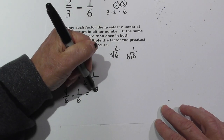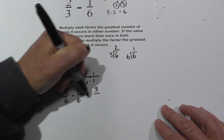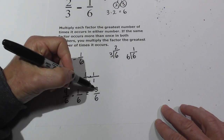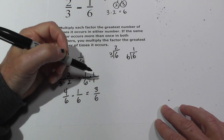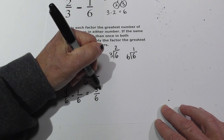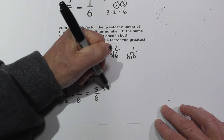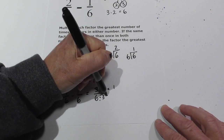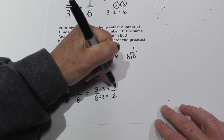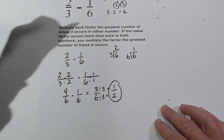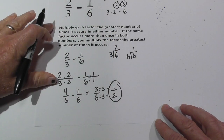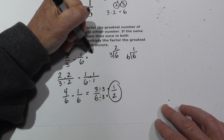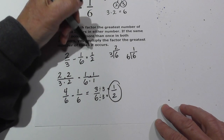Four minus one is three; the denominator stays six. Now I can reduce because three goes into six: three divided by three equals one and six divided by three equals two. So two-thirds minus one-sixth equals one-half.